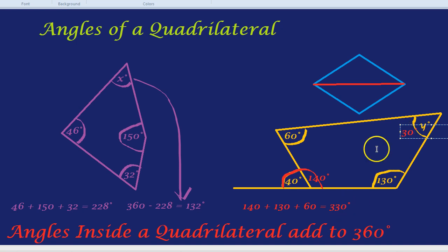330 add 30 is 360. And again, we've seen how the angles inside of a quadrilateral add up to 360 degrees.